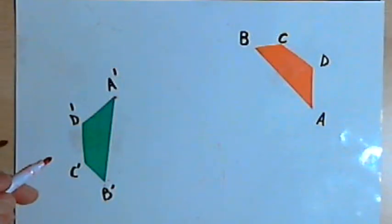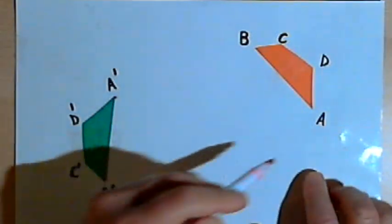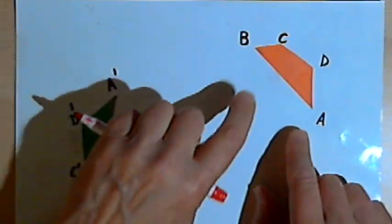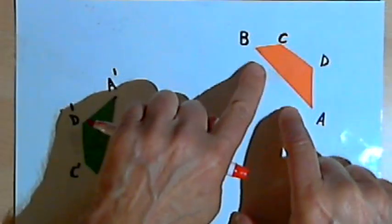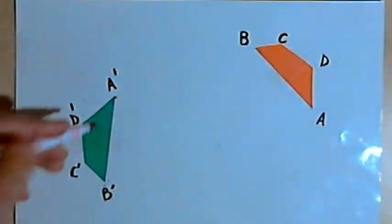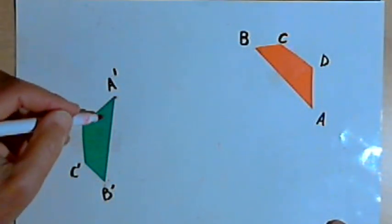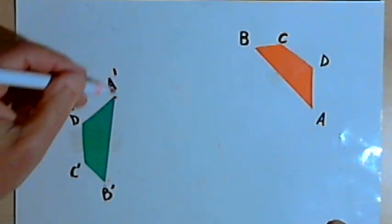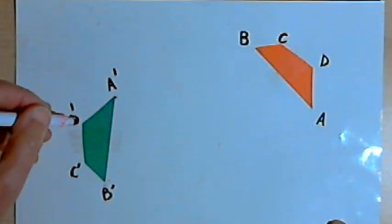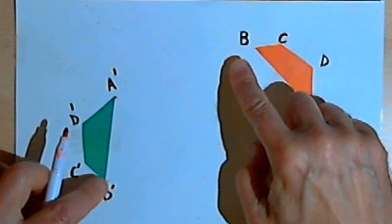So I've got this orange quadrilateral, and I've labeled it ABCD, and its image has been rotated through some angle over to where the green quadrilateral is. I've labeled that A-prime, B-prime, C-prime, and D-prime so we can see the corresponding angles.